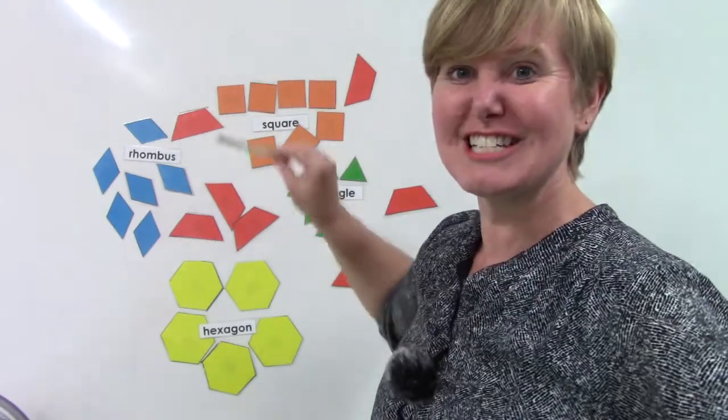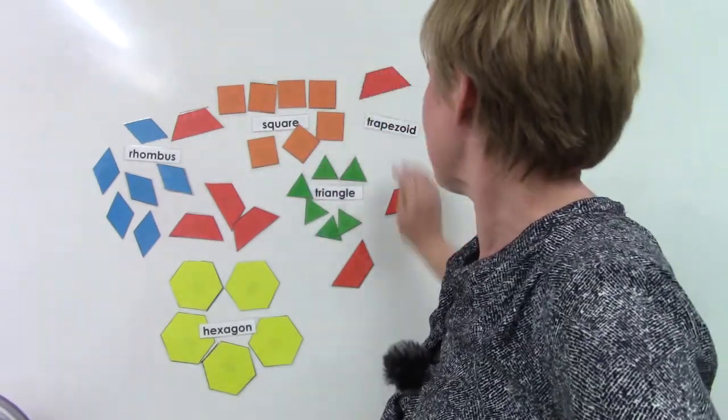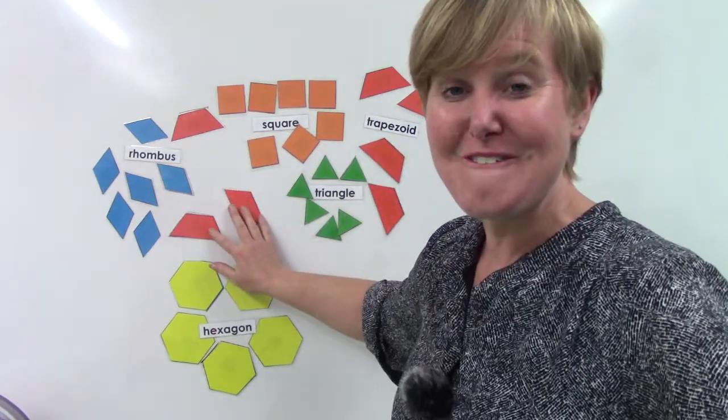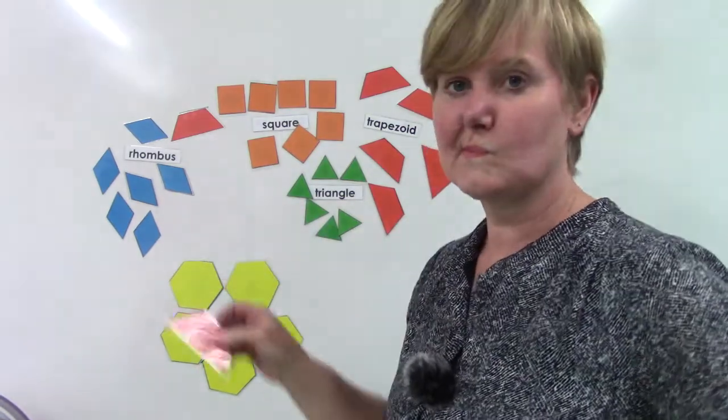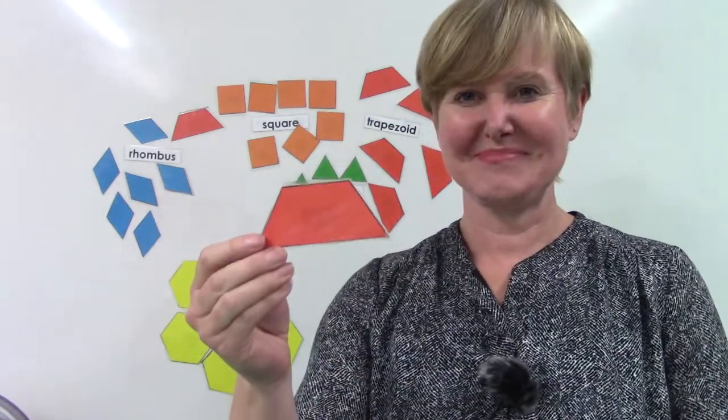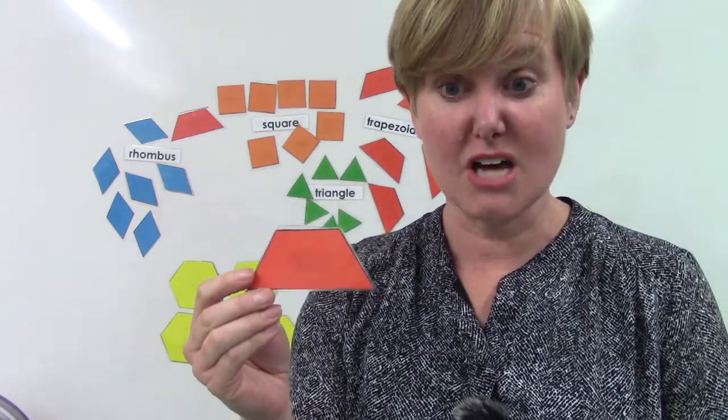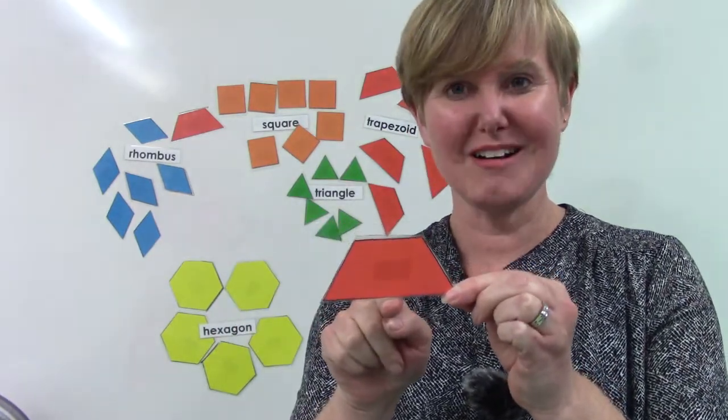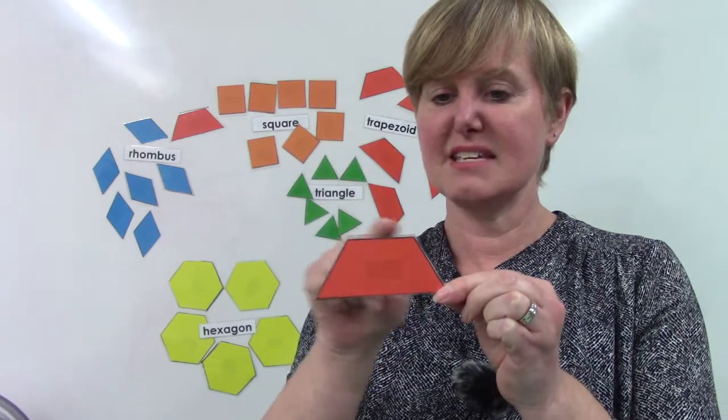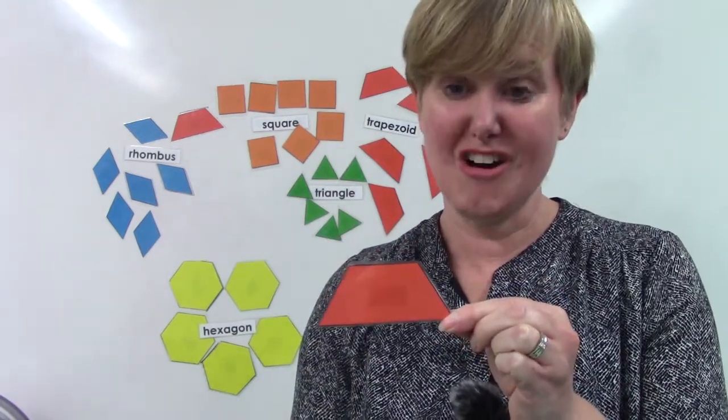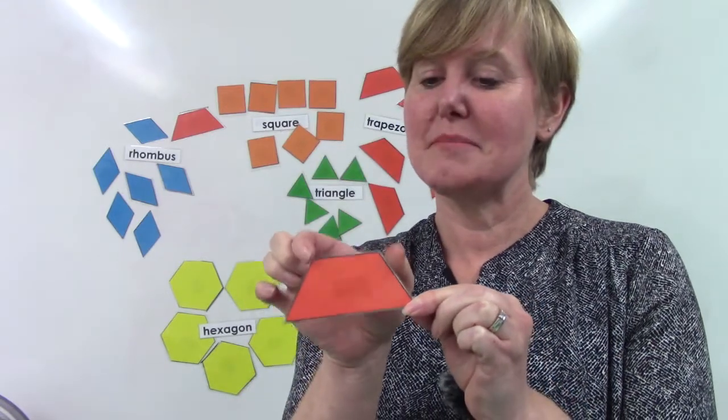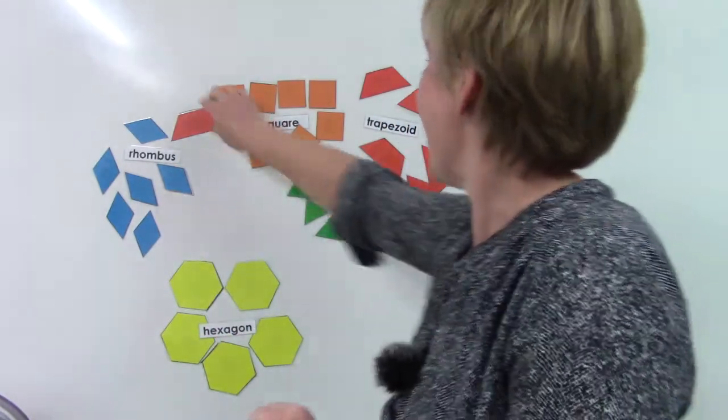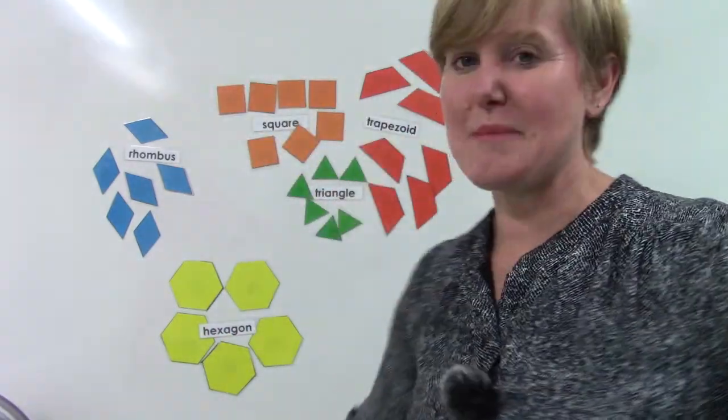We only have one more left. It's our trapezoid. And the trapezoid are our red ones. The trapezoids have four sides. But they don't look like a square at all. It almost looks like a triangle that got the top chopped right off of it. It has one, two, three, four sides. This side and this side are not the same length at all. This one is much shorter. But these two, they're the same length as each other.